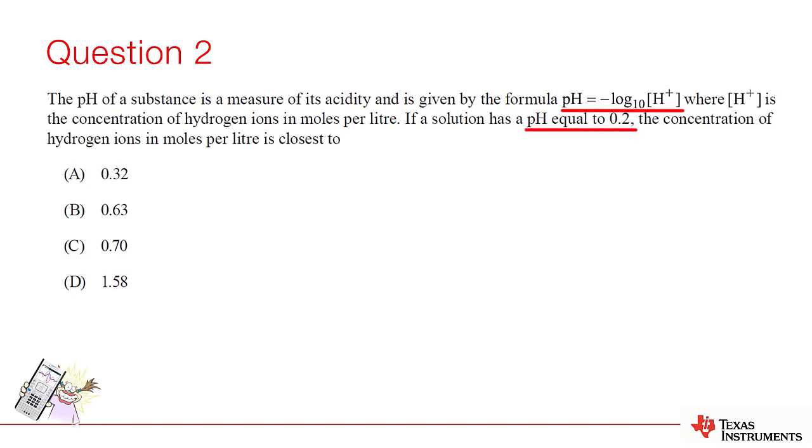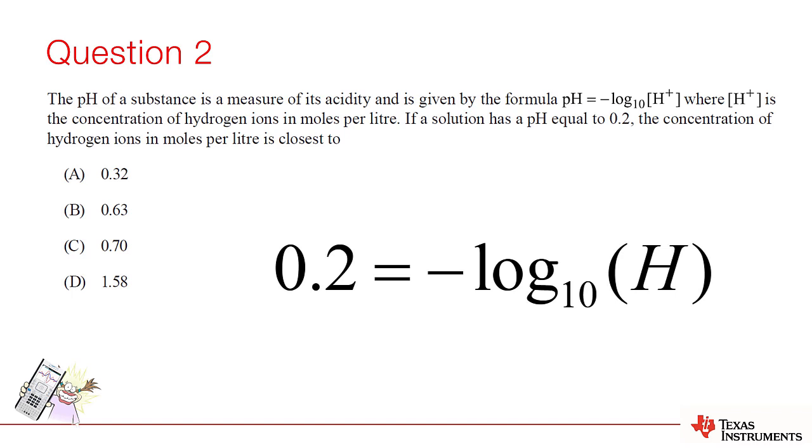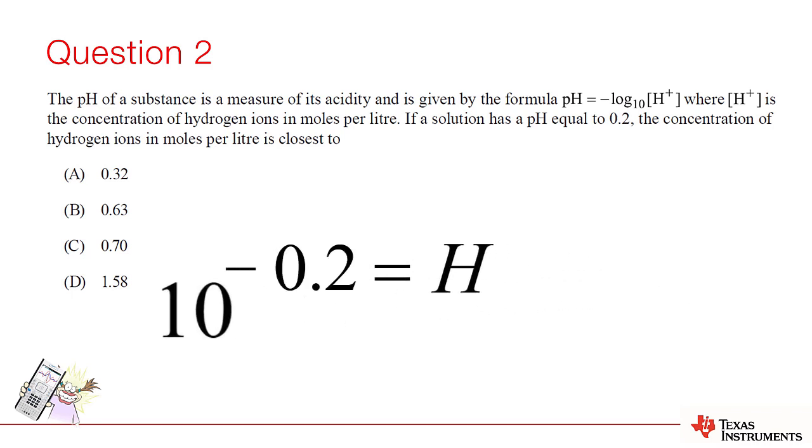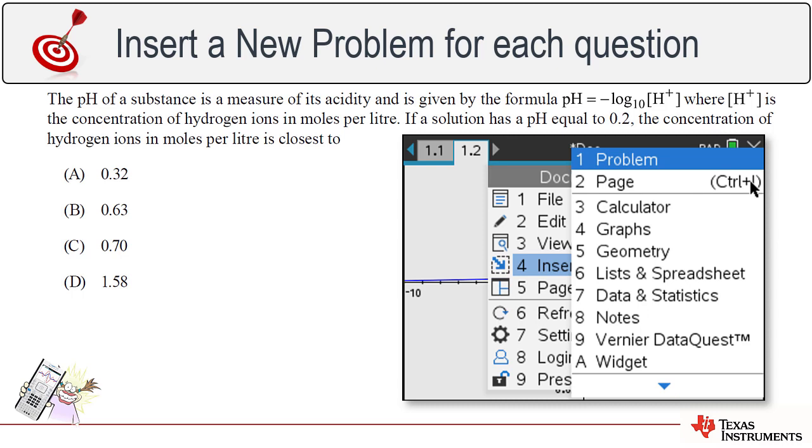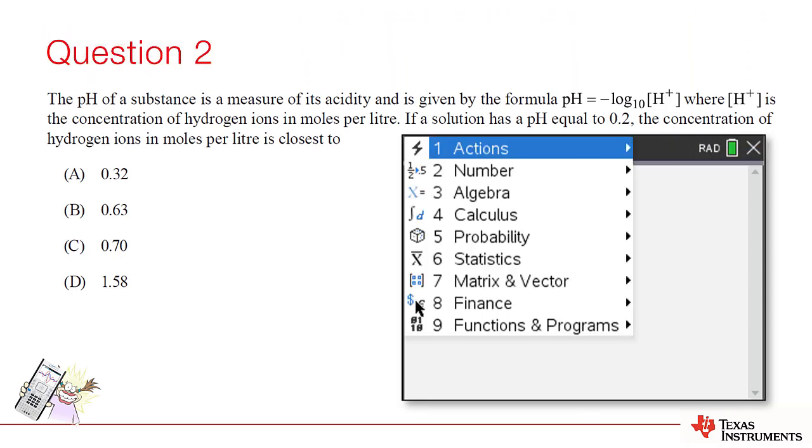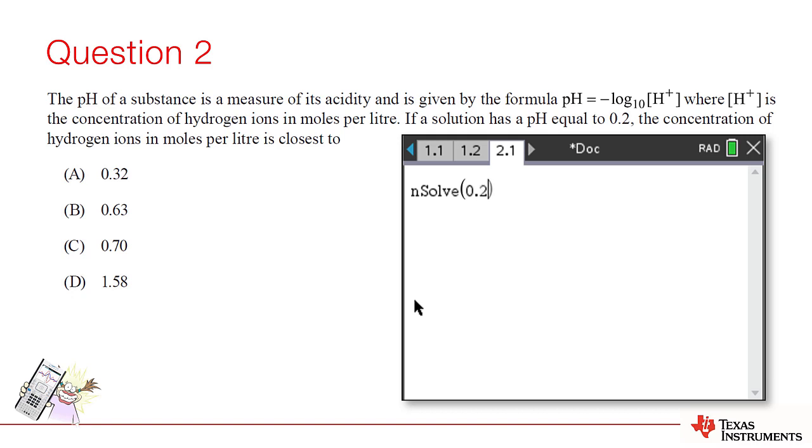If a solution has a pH equal to 0.2, now we can remove the context and write the equation: 0.2 equals the negative log base 10 of H. In this case, it's quicker to transpose the equation by hand and just evaluate 10 to the power of negative 0.2. If you're not confident in transposing or using this approach, you can just use the solve command. So the answer is option B.